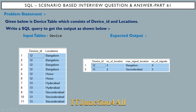So device IDs 12 and 13 are the distinct device IDs you are seeing in the output table. Corresponding to each device_id we have to find the number of locations, which is nothing but the count of distinct locations for that device_id.